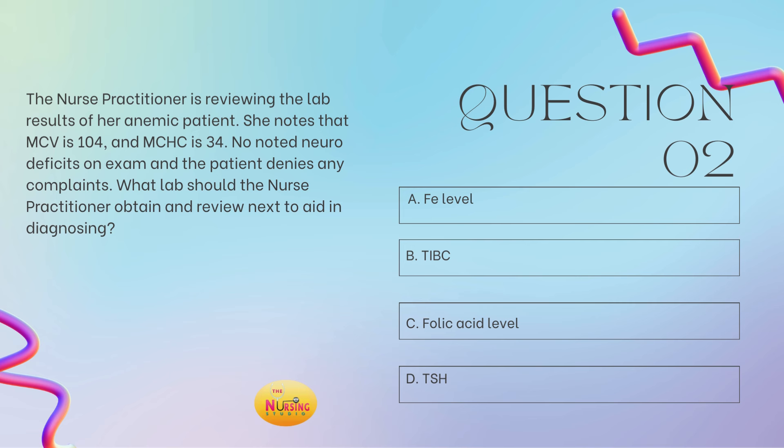All right, question number two. The nurse practitioner is reviewing the lab results of her anemic patient. She notes that MCV is 104 and MCHC is 34. No noted neurological deficits on exam, and the patient denies any complaints. What lab should the nurse practitioner obtain and review next to aid in diagnosing? Is it A, iron levels? B, total iron binding capacity? C, folic acid levels? Or D, TSH? Take a moment and tell me what you have in the comments.